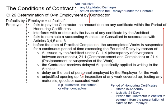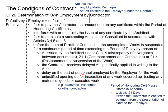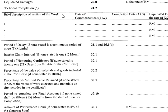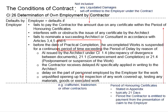The next case of employer default is when, before the date of practical completion, the uncompleted work is suspended for a continuous period that has exceeded the period of delay. This period is specified in the appendix of the contract and is typically taken as 3 months. Before practical completion, that means the work has not been completed, and the work has been suspended for a period exceeding these 3 months.